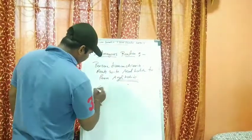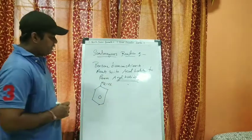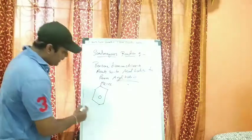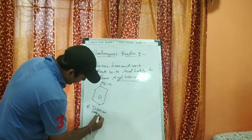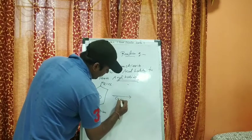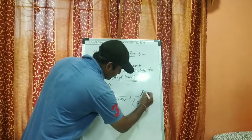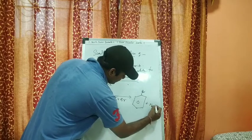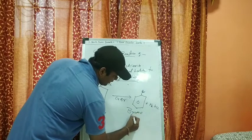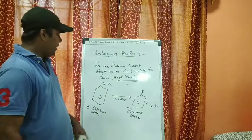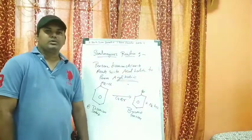In Sandmeyer's reaction, benzenediazonium chloride — a benzene ring with an N₂Cl group — reacts with a copper bromide catalyst to give bromobenzene as the aryl halide product. Benzenediazonium chloride reacts with acid halide in the presence of copper halide to form the aryl halide. This is a very simple and important reaction for your board exam.